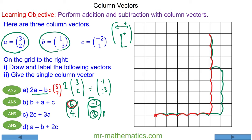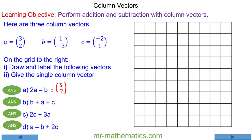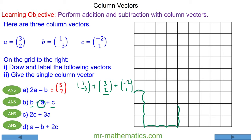You can see this works because 6 take away 1 equals 5, and 4 add 3 makes 7. So for question b, we have b which is 1 and negative 3, plus a which is 3 and 2, plus c which is negative 2 and 1. So we have b: we're going to go 1 to the right and 3 down, then 3 to the right and 2 up for a, and then negative 2 which is 2 to the left and 1 up. So actually we have moved 2 to the right, which is 2 and 0.